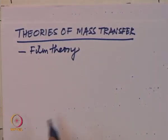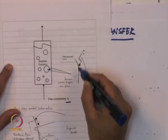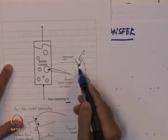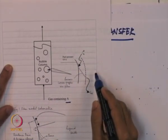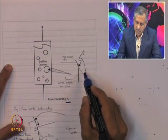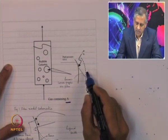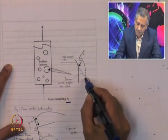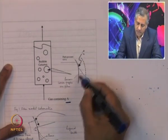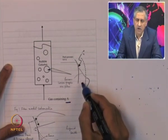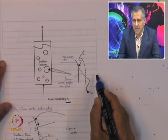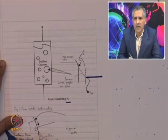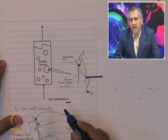The first is called the film theory. In film theory, there is a gas-liquid interface; on one side is the gas (part of the bubble) and on the other side is the turbulent liquid. The entire resistance to mass transfer is assumed to be located in a thin stagnant film between the interface (solid line) and a dashed line. Outside the film, the concentration is kept uniform by turbulence.